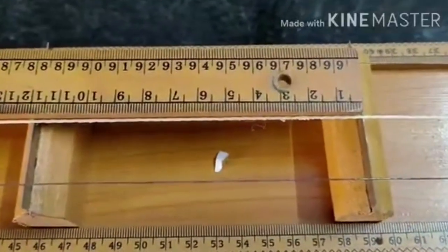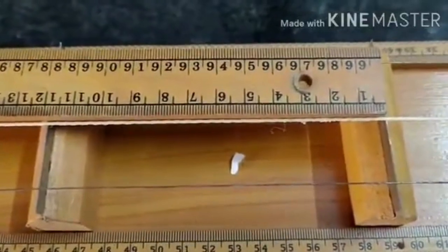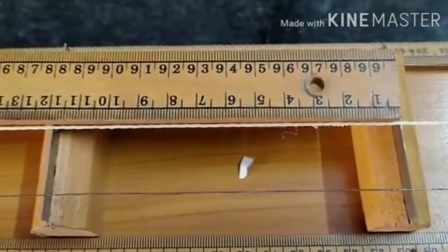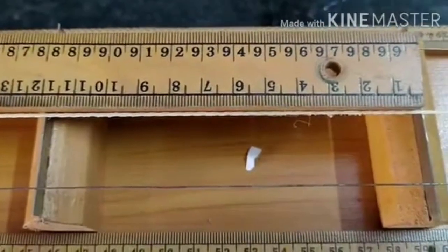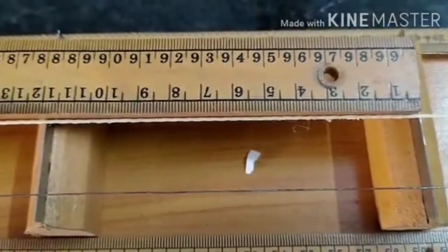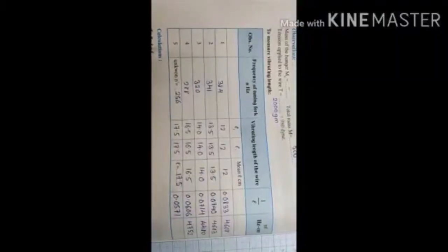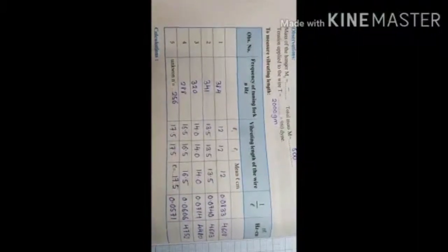Now we will check the distance between the two knife edges with the help of meter scale. So it's 12 cm. So here the vibrating length of the wire for frequency 384. Now we will